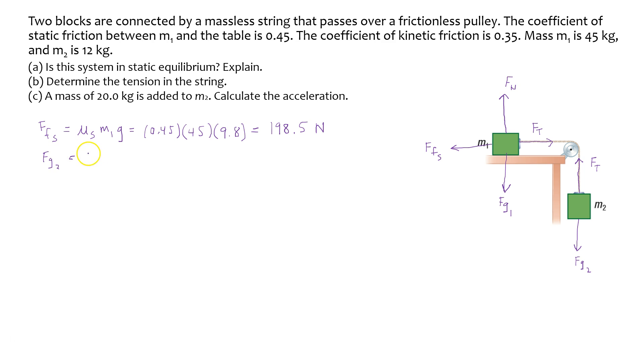So finding the gravity, it's mass 2 times G. So mass 2 is 12 kilograms multiplied by 9.8, which is 117.6 Newtons.